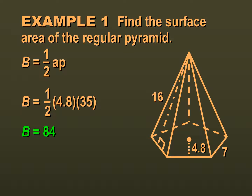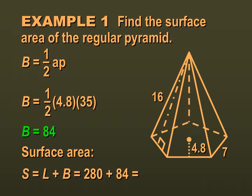Now we know our lateral surface area and the area of our base, which means we can add them up. Our total surface area is our lateral surface area plus our base: 280, which was our lateral surface area from multiplying the area of one triangle by five, plus 84, which was the area of the pentagon base. Adding them together, we get a total surface area of 364 square units.